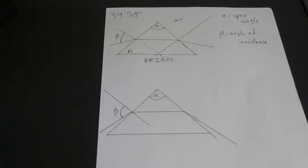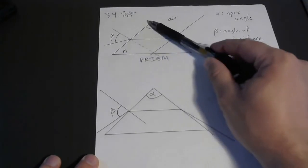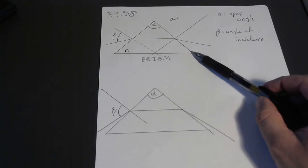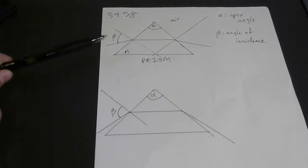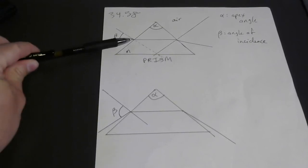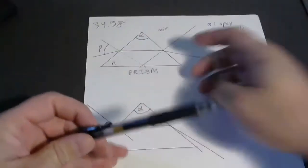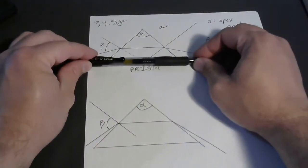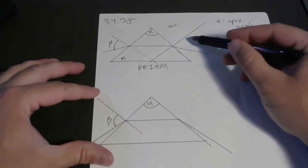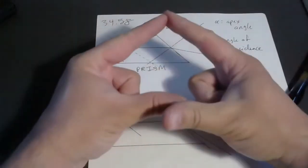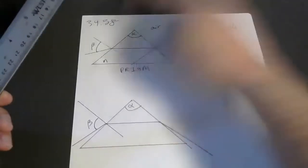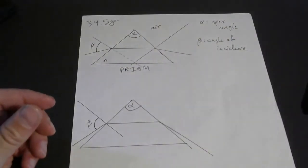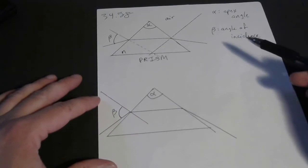Here's another problem from homework involving a prism and refraction. You've got a prism where two sides of the triangular prism are equal — an isosceles triangle — with an apex angle alpha. The idea is you shoot a laser beam into the prism at just the right angle so that on its way through the prism the beam travels parallel to the bottom face, then exits. You can use the measured angles to apply Snell's law and determine the index of refraction.